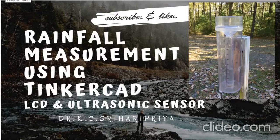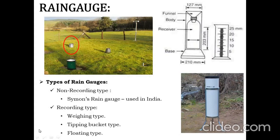Hi everyone, today we will try to design a simple rainfall measurement system using Tinkercad. The standard instrument used for the measurement of rainfall is a rain gauge — an instrument used to measure the precipitating rain in a given amount of time per unit area. It determines the depth of precipitation over a unit area. The instrument consists of a collection container, a calibrated cylinder with a circular funnel of 203 mm diameter. Rain gauges are broadly classified into non-recording type and recording type.